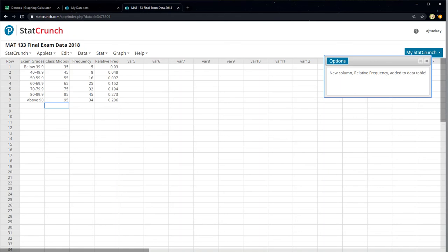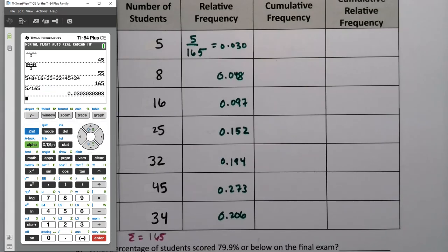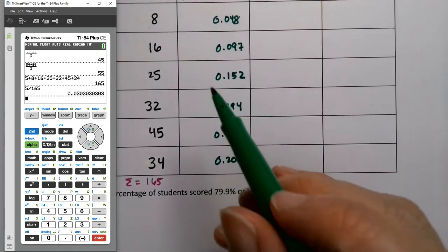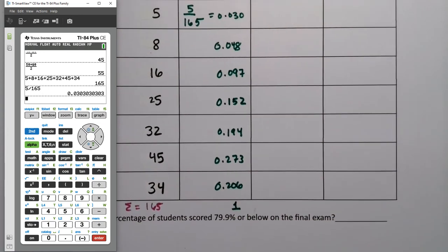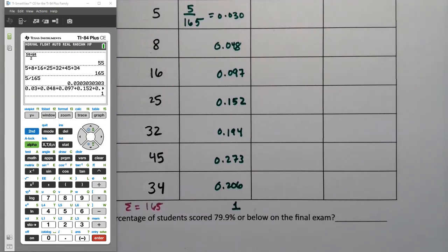But again, if you want to use your calculator and just type them all, that's fine too. Whatever. It all works. I figured I have StatCrunch. I might as well take full advantage of it. Now, if we played our cards right, when we add up all these decimals, it should make one. I'll pause and I'll go double check it really quickly. Yes, indeed. When I add those relative frequencies, it does make one.